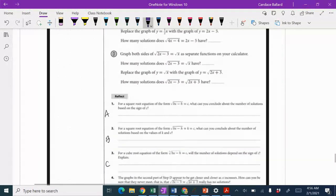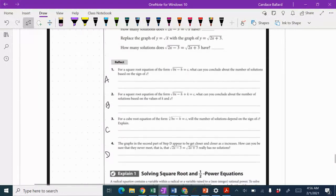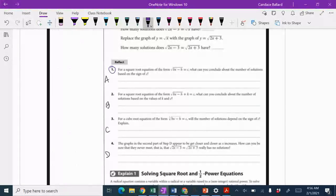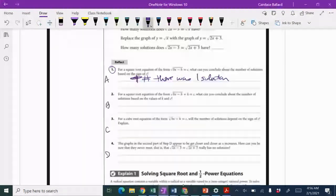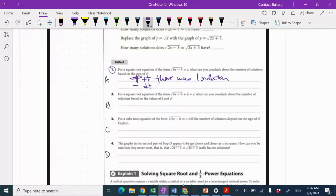Let's reflect on what happened. For a square root of the form square root of bx minus h equals c, what can you conclude about the number of solutions based on the sign of c? If c was a positive number, there was one solution. If there was a negative number, there were no solutions.